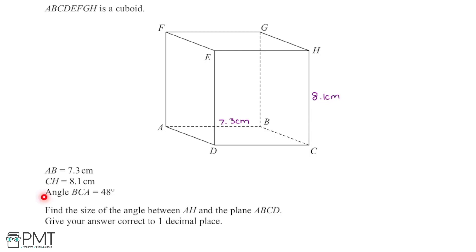I'm then told that angle BCA is equal to 48 degrees. Now if I have a look, the angle BCA is this angle in here, and I can draw that in, if I draw the line AC in, this angle here, this angle BCA, and that's 48 degrees.